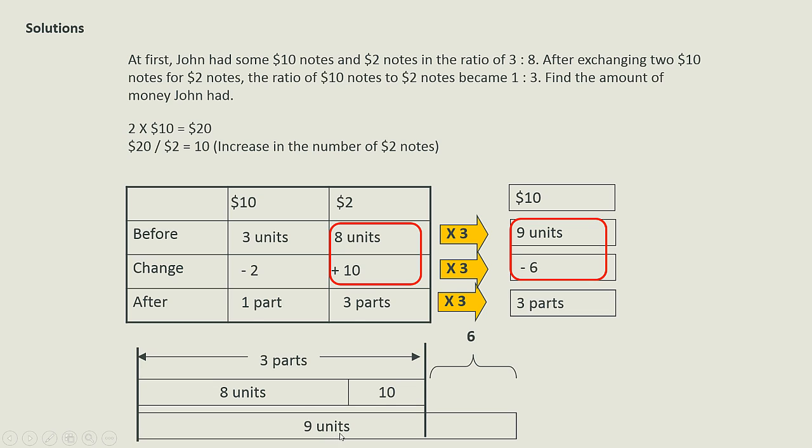From here to here is 6. All right, so from the model we can find what is 1 unit, right? Because here is 8 units and here is 9 units, so here must be 1 unit. So 1 unit will be 10 plus 6 which is 16.